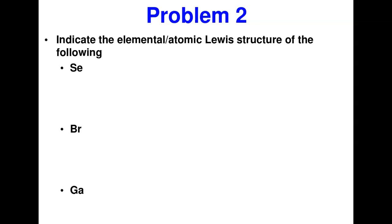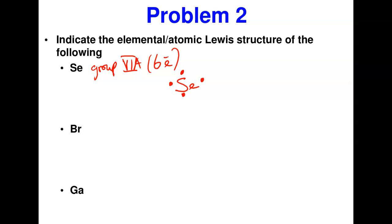Selenium belongs to group 6A — the same group as oxygen — meaning it has six electrons in its outermost shell. I write the symbol for selenium, put one dot on each of the four sides (that's four), and then place the two remaining dots to make a pair on one side. That is the Lewis dot structure of selenium.